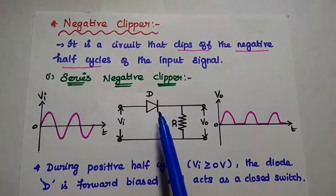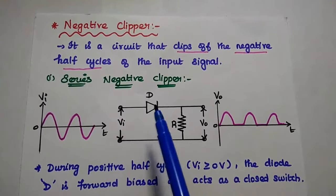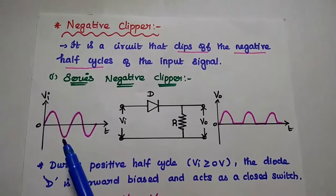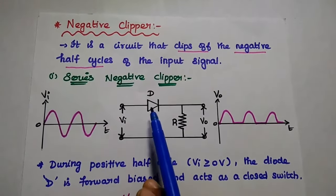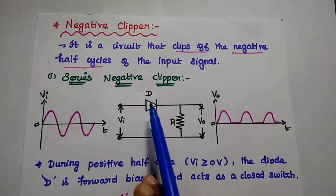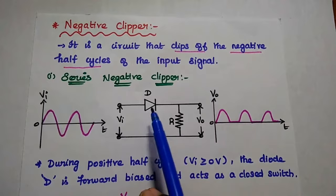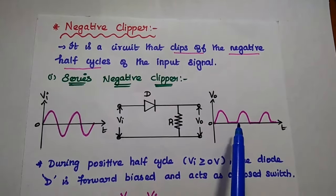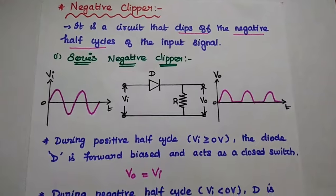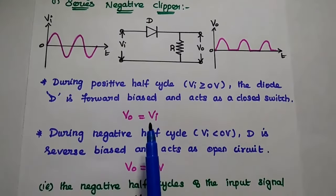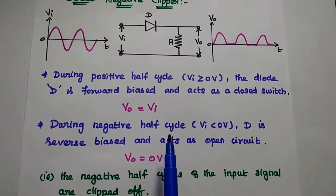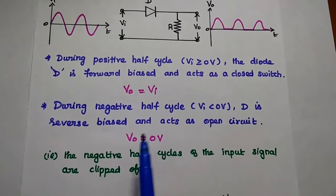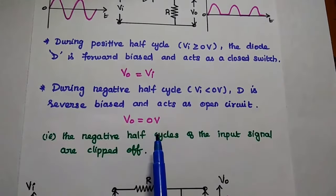Forward biased means the diode conducts the current and acts as a closed switch. So whatever input is given, the same appears at the output side. During the negative half cycle, the input is negative and the anode is positive, meaning the diode is reverse biased. If it is reverse biased, it acts as an open switch — there is no current conduction — so the output is simply zero. We can clip off the negative half cycles.